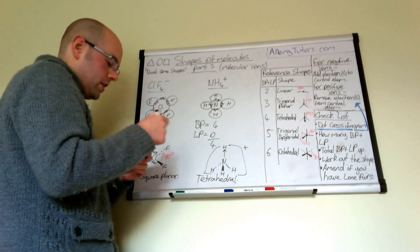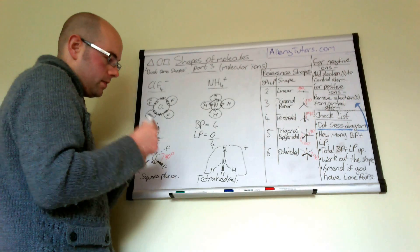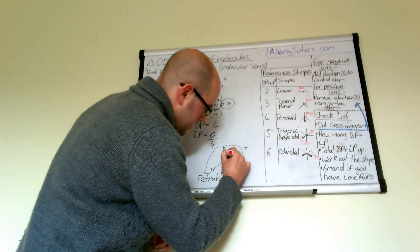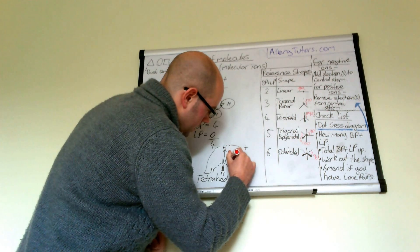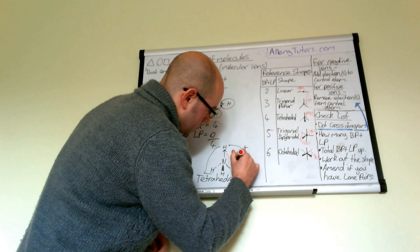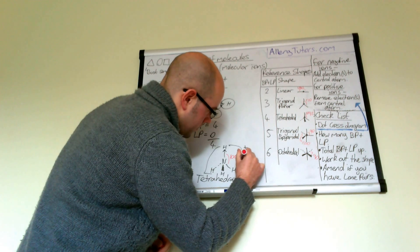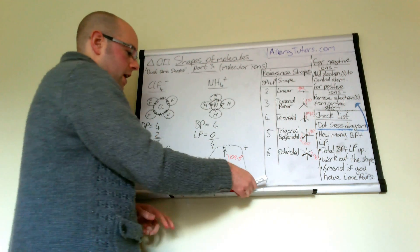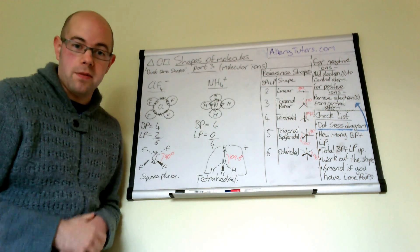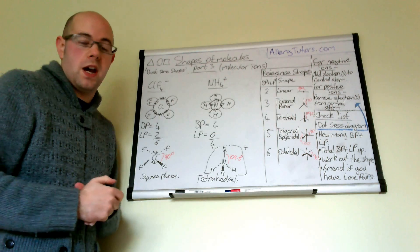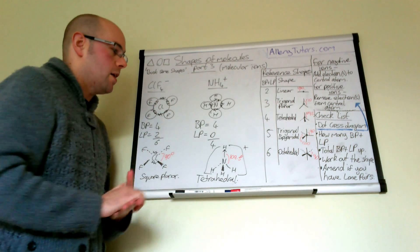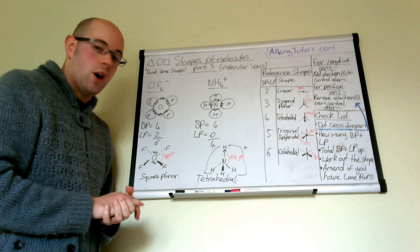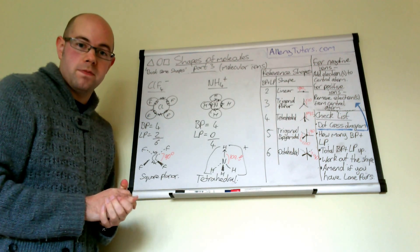The bond angle between each one of these is 109.5 degrees. And that is how you work out the shapes and the bond angles for molecular ions. I hope that helps. Bye.